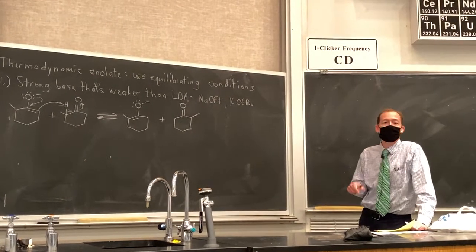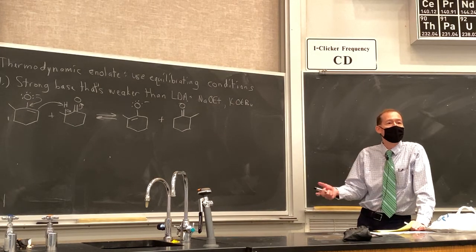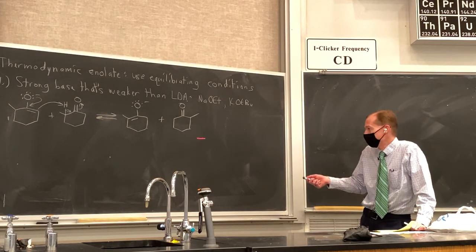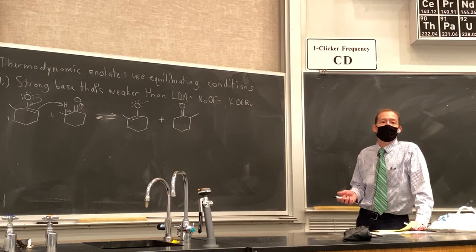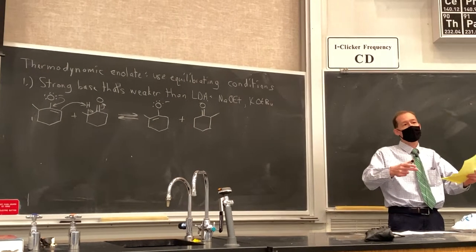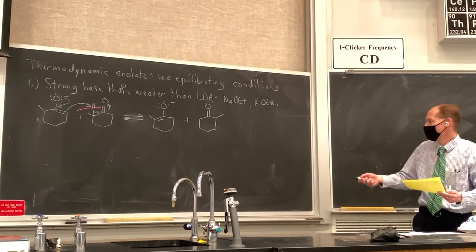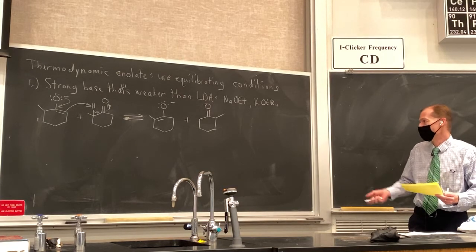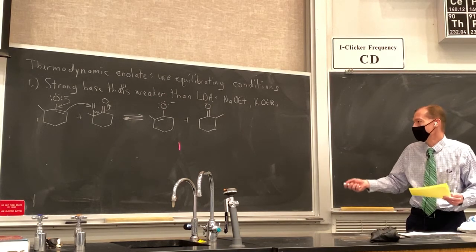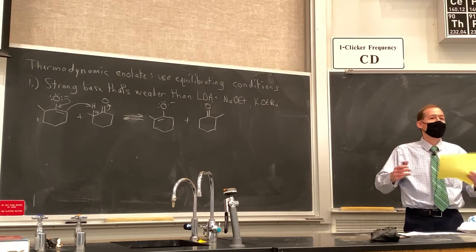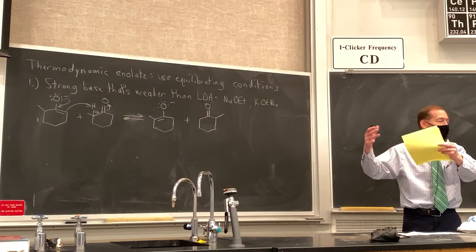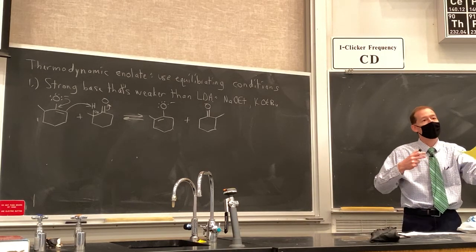Having a small amount of enolate and a large amount of ketone present is desirable for generating the thermodynamic enolate because it allows this equilibrium. The overall ratio of enolate to ketone won't change — still about 1% enolate and 99% ketone — but within that 1% enolate, the equilibrium will favor the thermodynamic enolate. So of that 1%, a majority will be the thermodynamic enolate and the minor product will be the kinetic enolate.